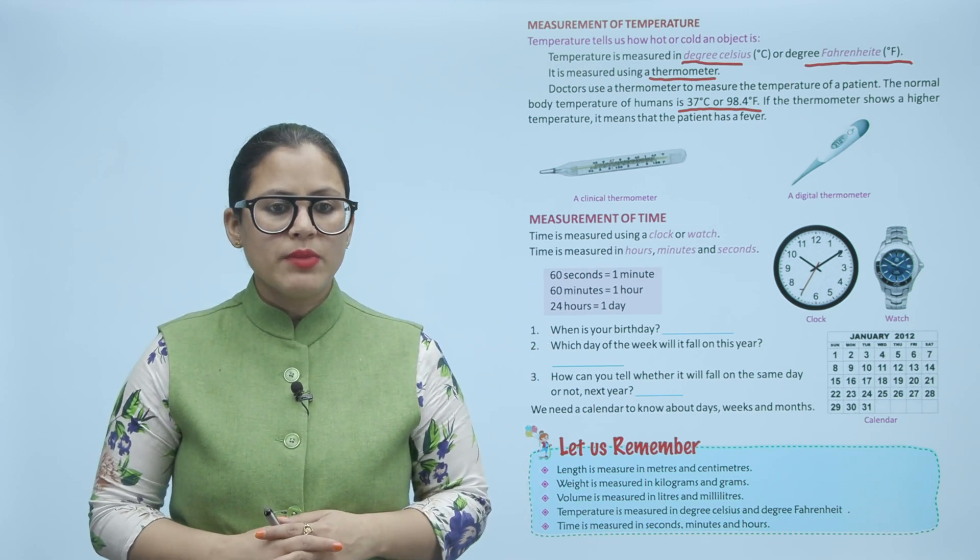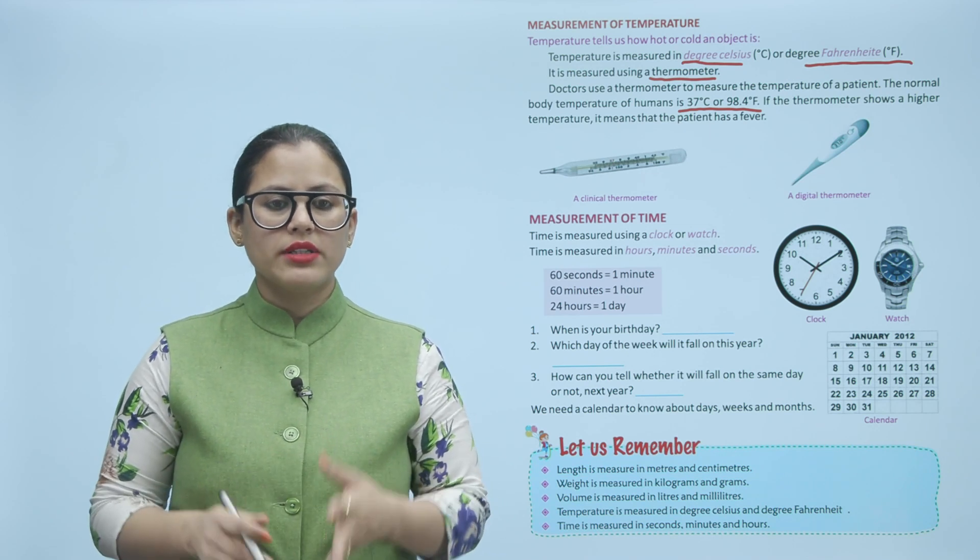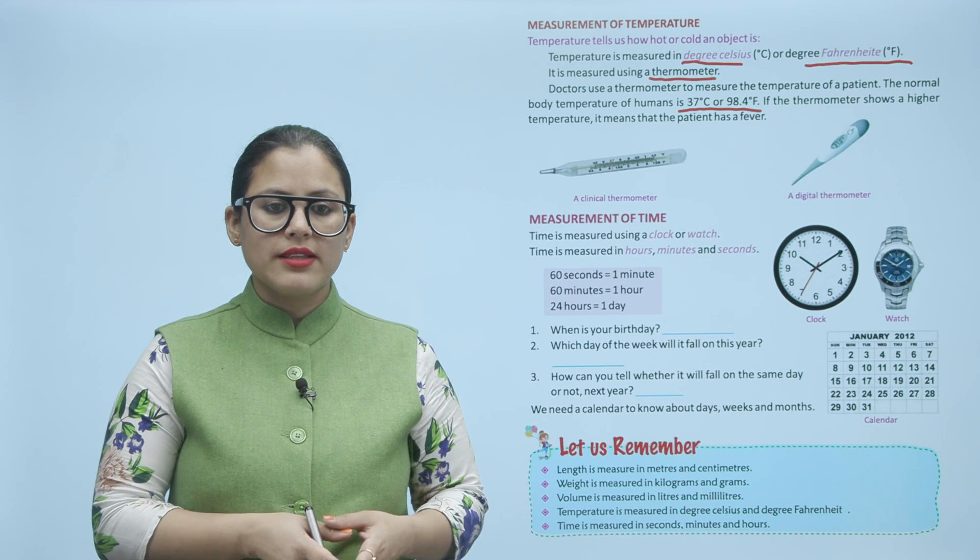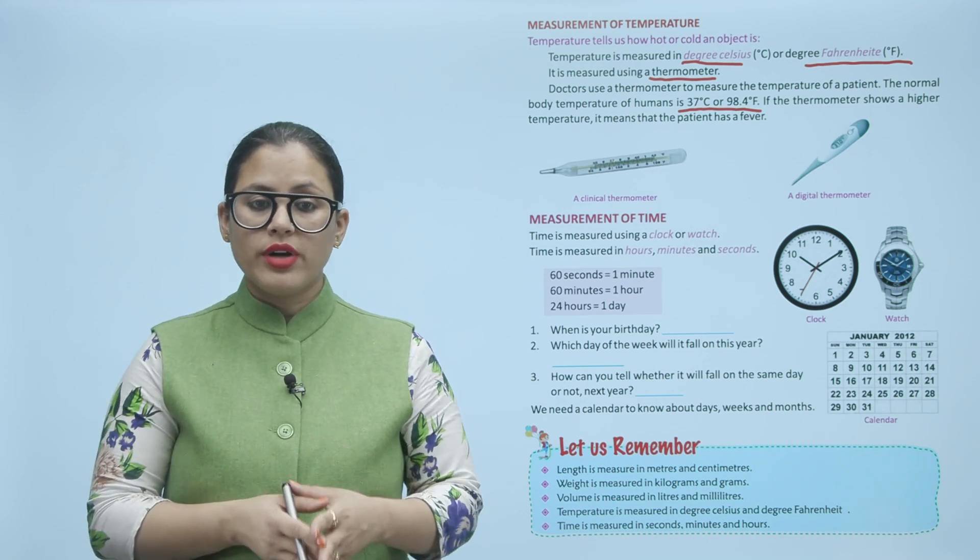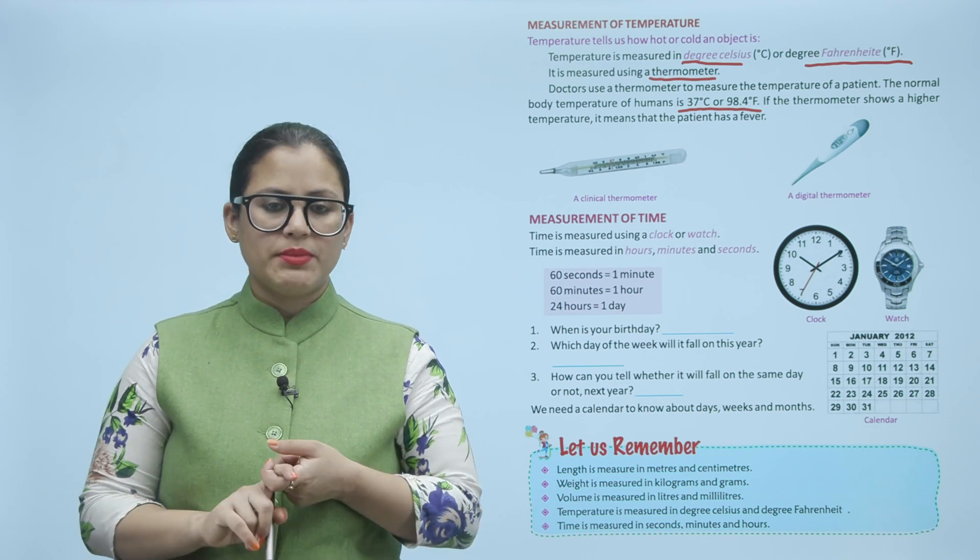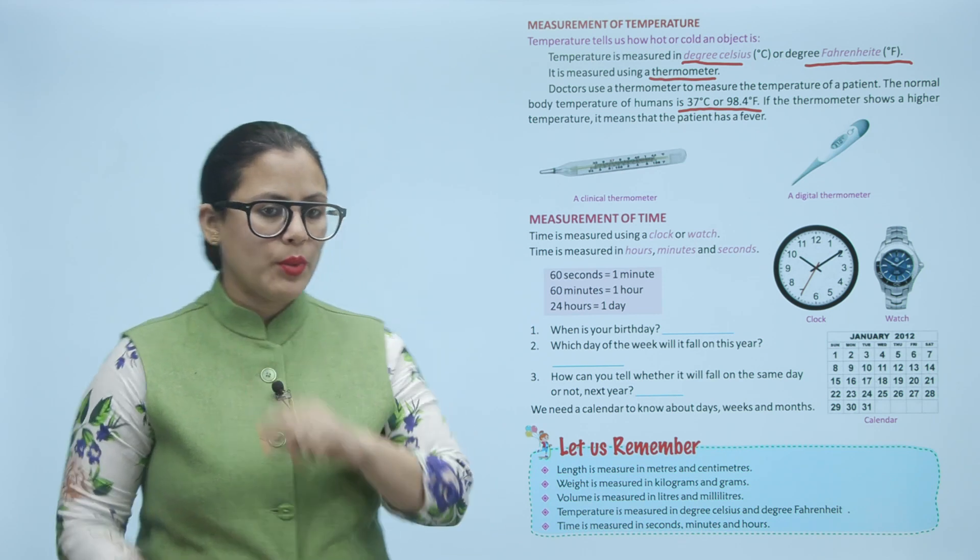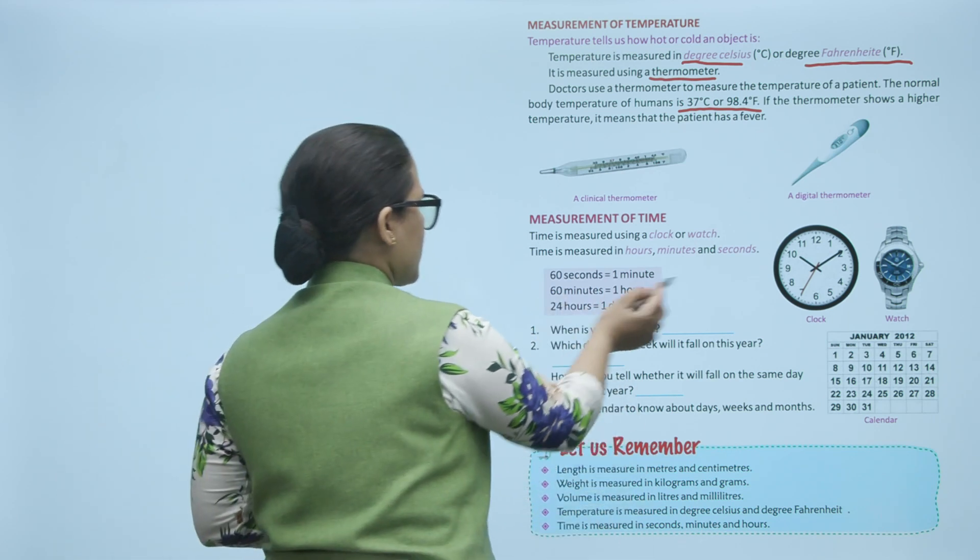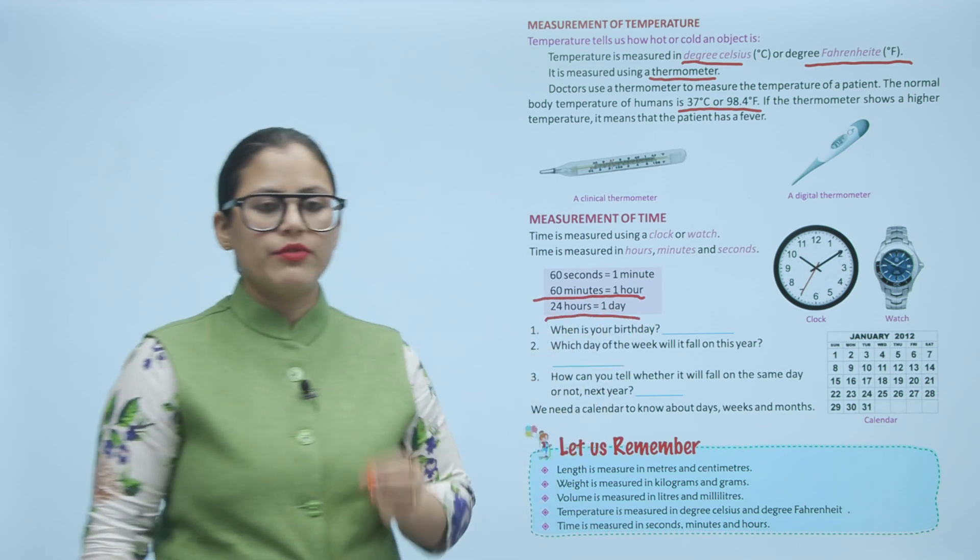Measurement of time. Time is measured using clock or watch. Time is measured in hours, minutes and seconds. 60 seconds equals one minute. 60 minutes equals one hour and 24 hours equals one day. Time is measured in hours, minutes or seconds with the help of clock or watch. One minute has 60 seconds. One hour has 60 minutes and one day has 24 hours.